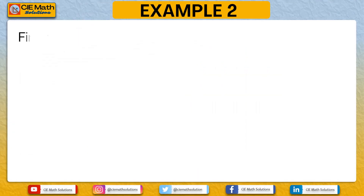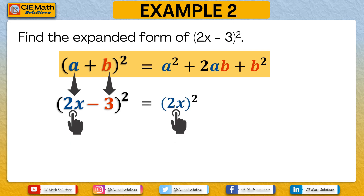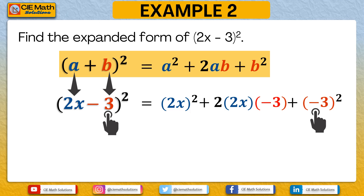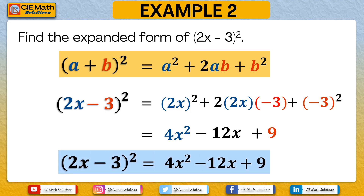For example 2, we will expand 2x minus 3 squared. Following the algebraic identity, a is 2x and b is negative 3. Substituting: a squared is 2x squared, 2ab is 2 times 2x times negative 3, and b squared is negative 3 squared. Simplifying: 2x squared equals 4x squared; 2 times 2x times negative 3 gives negative 12x; and negative 3 raised to 2 is positive 9. Therefore, 2x minus 3 squared equals 4x squared minus 12x plus 9.